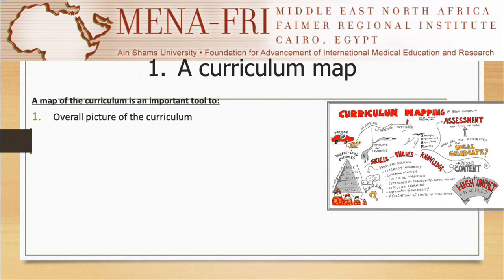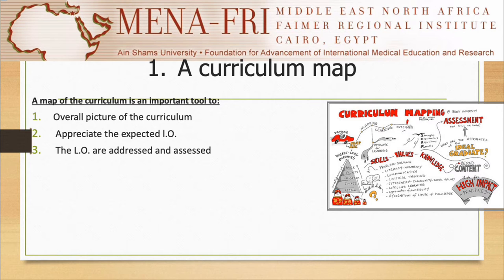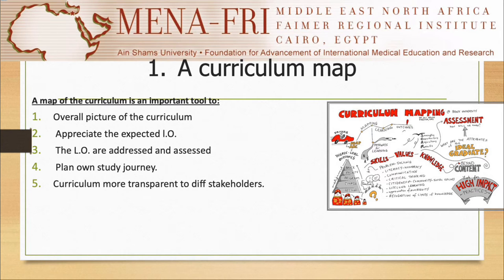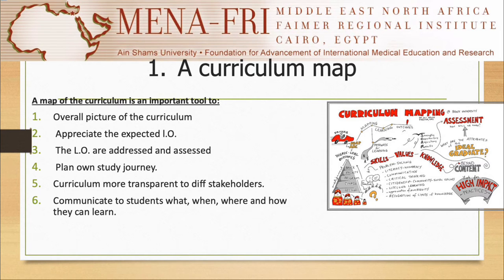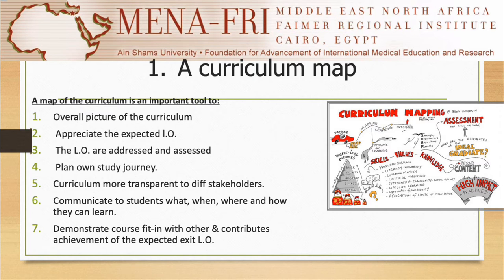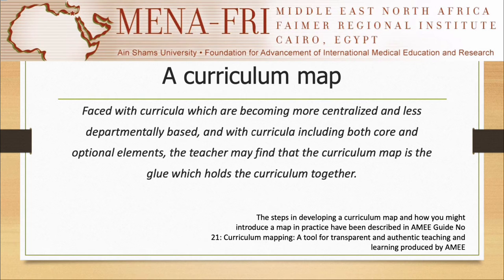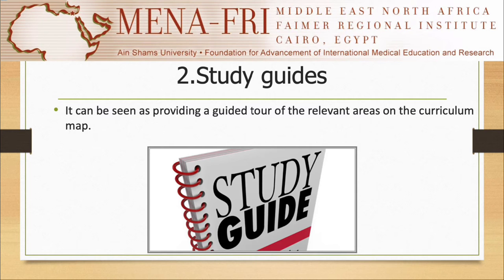A curriculum map is important because it gives students an overall picture of the curriculum, helps them appreciate the expected learning outcomes, and shows how these outcomes will be addressed and assessed. It also helps students plan their own study journey and makes the curriculum more transparent to different stakeholders. It facilitates communication about what, when, where, and how students can learn. It demonstrates how your course fits within other courses and contributes to the achievement of expected exit learning outcomes. With the shift toward a more centralized and less departmentally based curriculum, the curriculum map is considered the glue that holds the curriculum together and helps students connect the pieces.